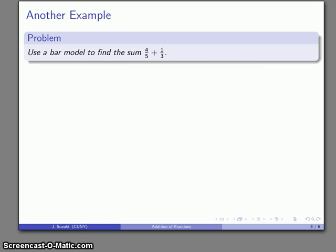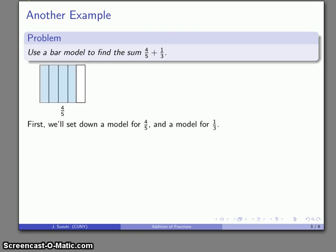What about a different subtraction? So for example, four-fifths plus one-third. So again, I'll set down my model for four-fifths, and again, I'll divide this unit bar vertically this time. And my model for one-third, again, I'll divide it horizontally this time. And so I now have the model four-fifths plus one-third.